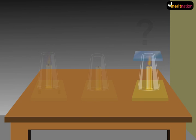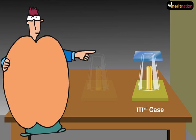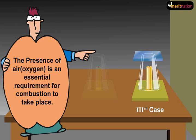And what about the third case? In the third case, the flame goes off as soon as it is covered with the glass plate. So we can say that the presence of air or oxygen is an essential requirement for combustion to take place.